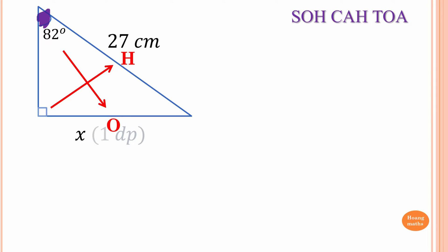We have O and H, so from SOH-CAH-TOA we use SOH — that's Sine. Sin of 82° is equal to O over H. O is x and H is 27, so sin(82°) = x/27.